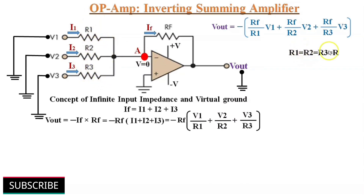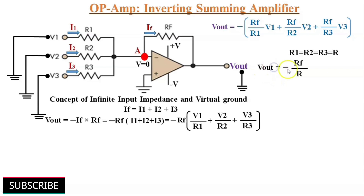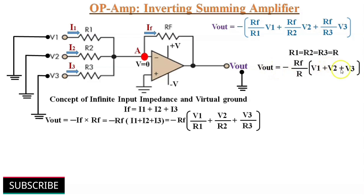Then we can write Vout as minus RF/R multiplied by (V1 plus V2 plus V3). Thus the output voltage is proportional to the algebraic sum of input voltages.